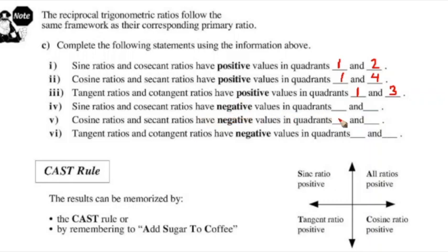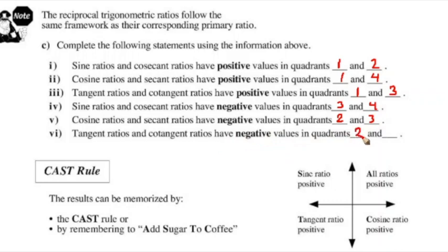Sine and cosecant are negative in quadrants three and four, where y is negative. Cosine and secant have negative values in quadrants two and three, where x is negative. Tangent and cotangent are negative where one of x or y is negative and the other is positive — so that's quadrant two (negative x, positive y) and quadrant four (positive x, negative y).